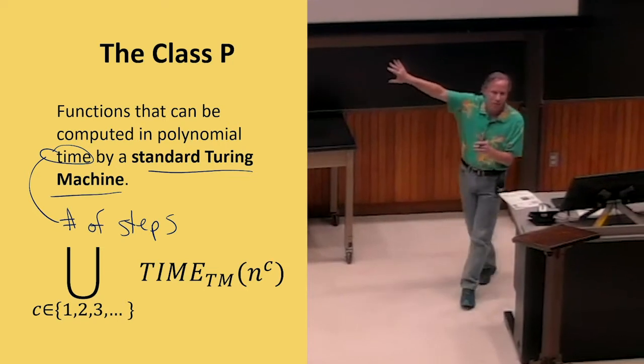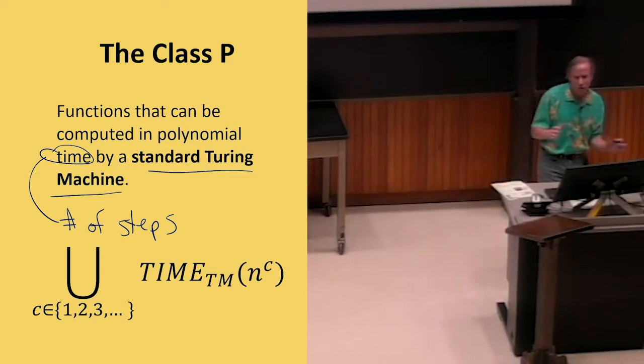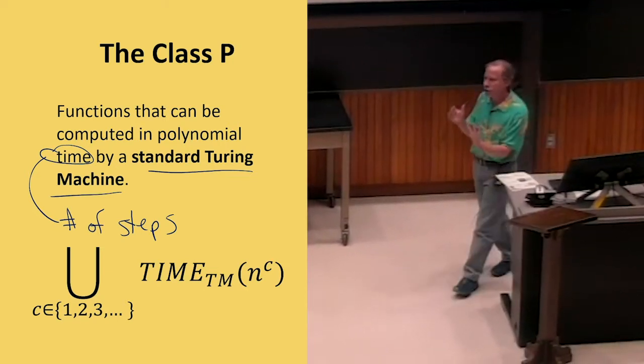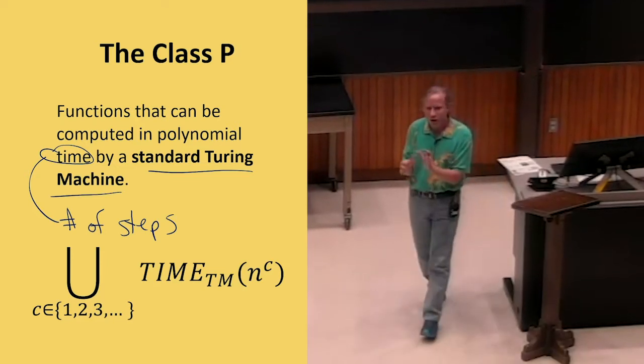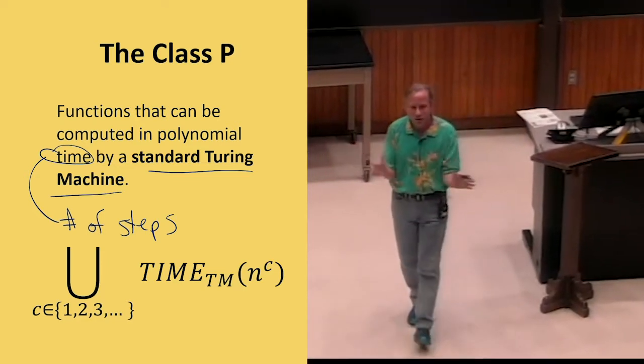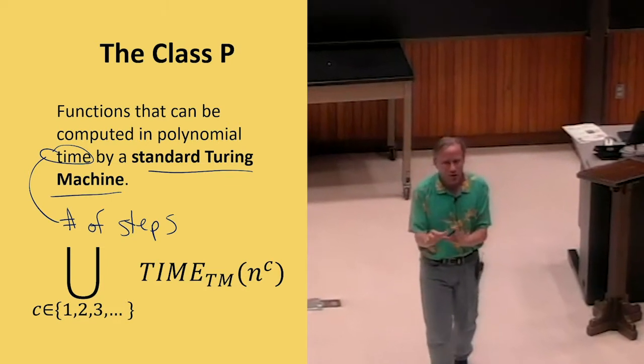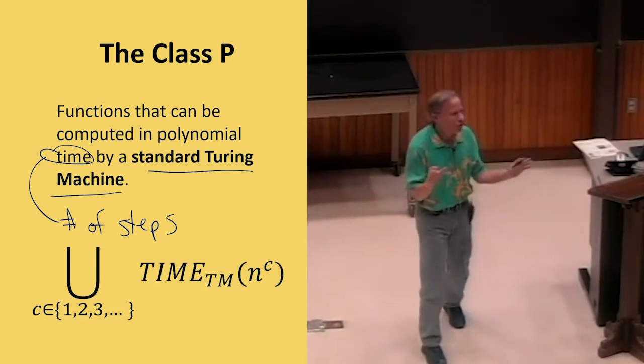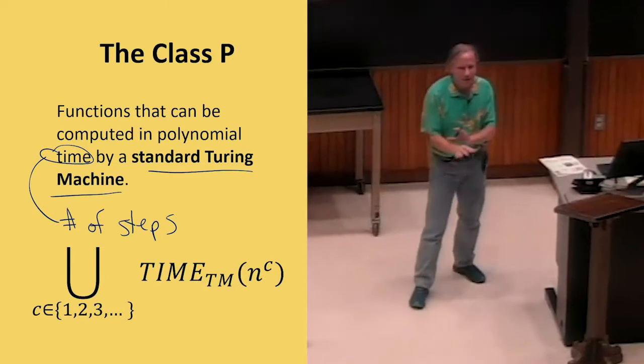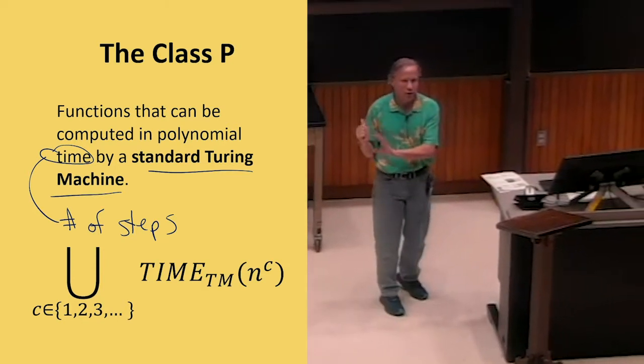C can be anything. That's why it's a robust class. So this means that even if we adjust our definition of the Turing machine in little ways like saying, well, let's have two tapes, let's have it infinite in both directions, let's allow it to take four steps every step, none of those things are going to change the functions in this class.